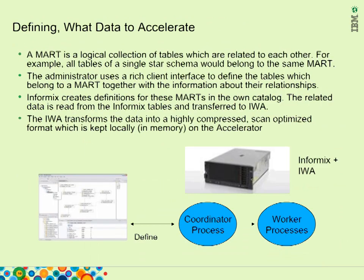This describes the process of how a customer defines what data needs to be accelerated. Using a GUI tool called the Smart Analytics Studio, the user defines a data mart by clicking on the fact table and surrounding dimension tables that compose the mart. Informix will then use that info to transfer user data into a highly compressed, scan-optimized format for all subsequent qualifying queries. Internally, IWA uses a number of nodes — also known as processes — to build the mart. The number of worker processes defines the number of threads used to build the optimized format.